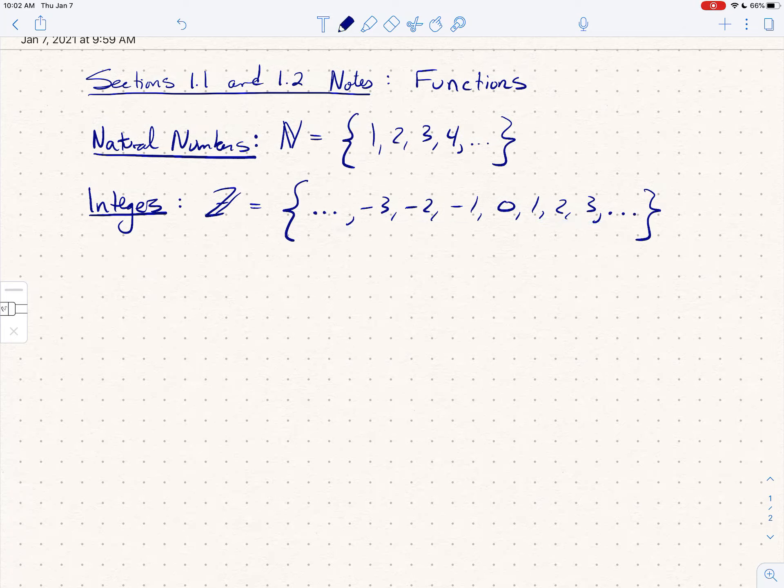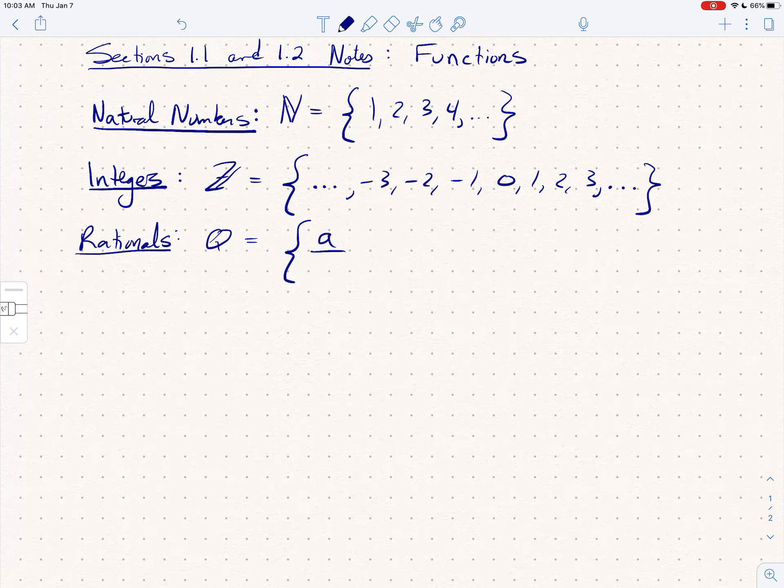And then the next set of numbers that we're interested in are the rational numbers. So the rationals we usually denote with a Q, and this is the set of all fractions: all A over B such that A and B are integers, and of course we don't want B to be 0. So you should think about this as the set of all fractions.